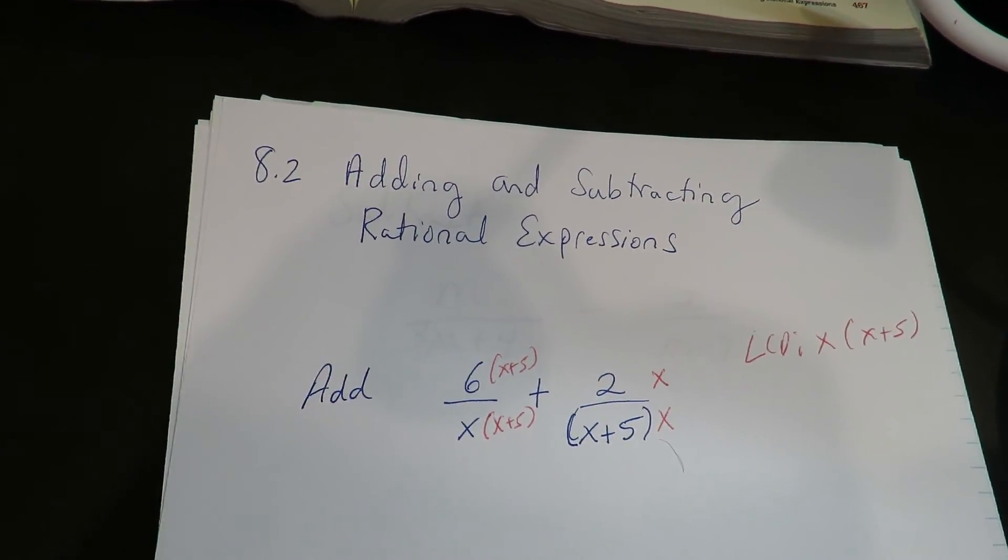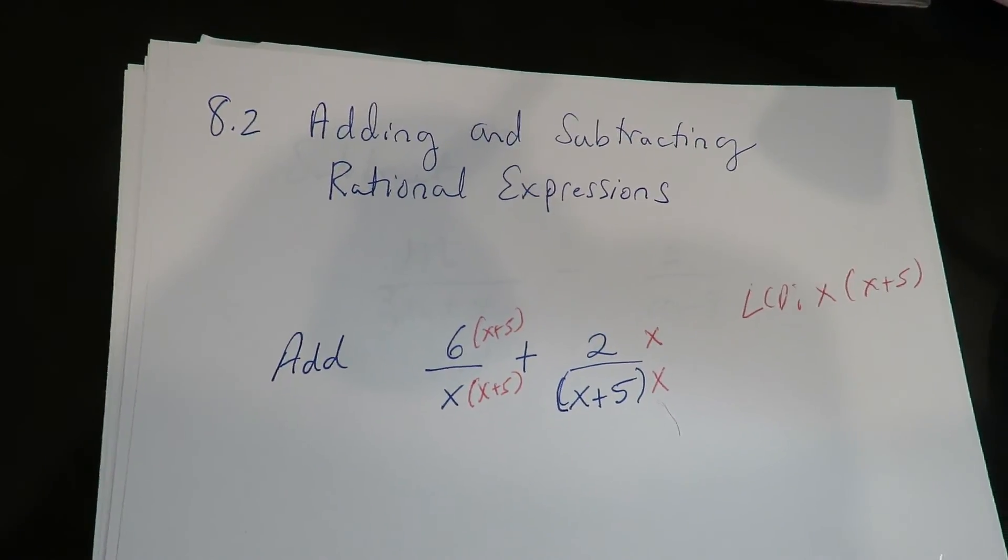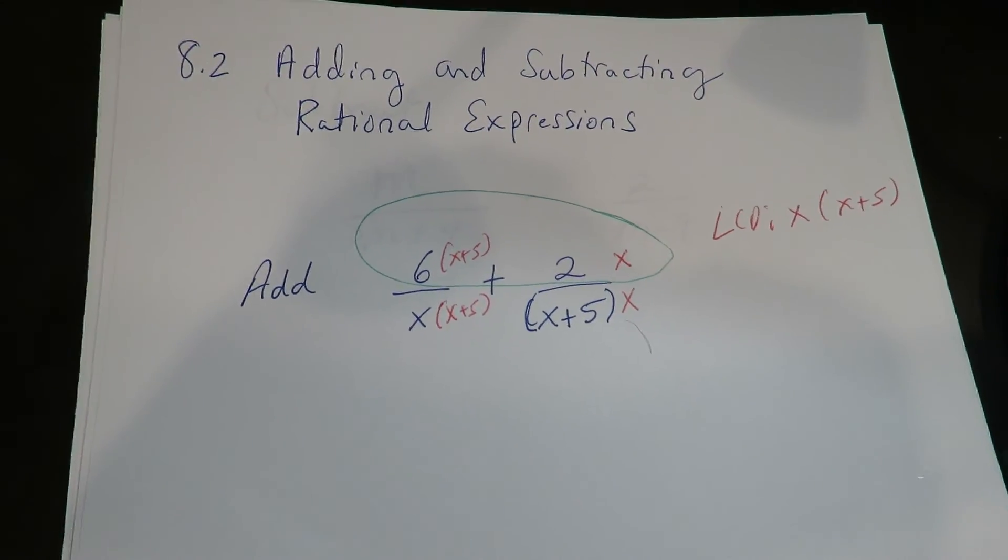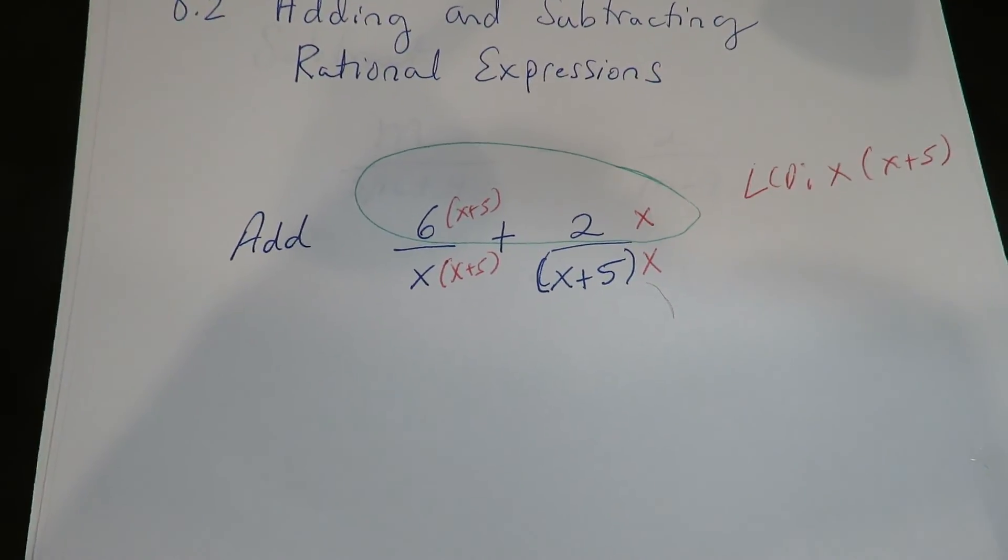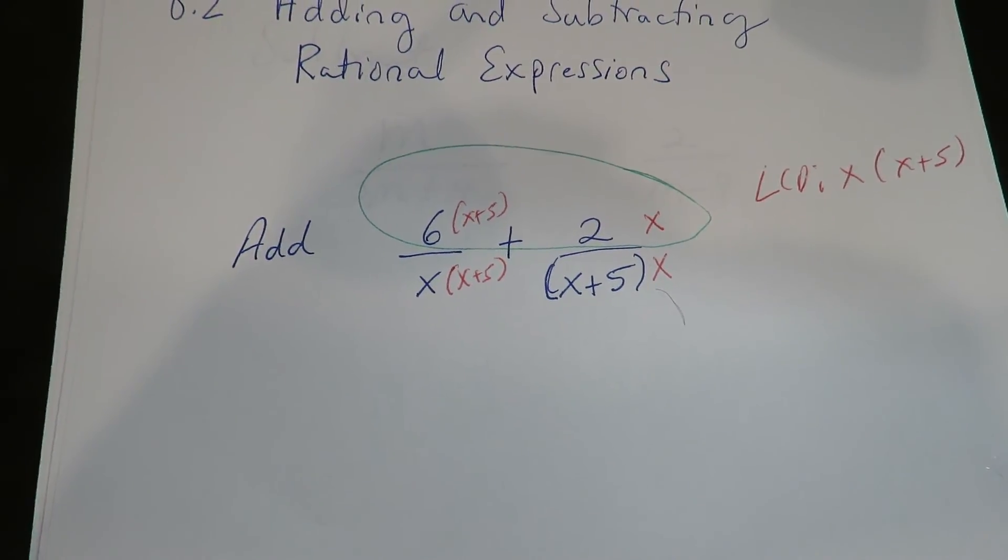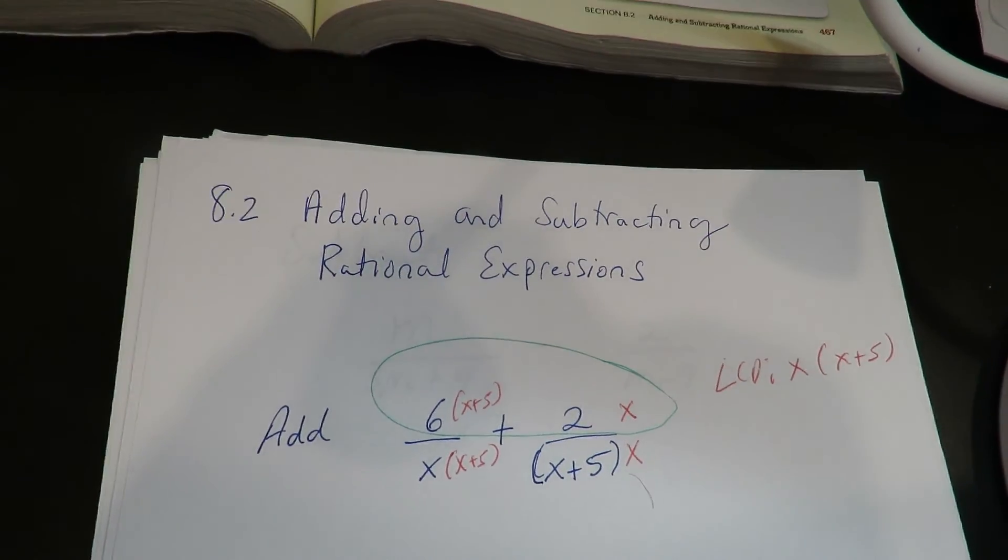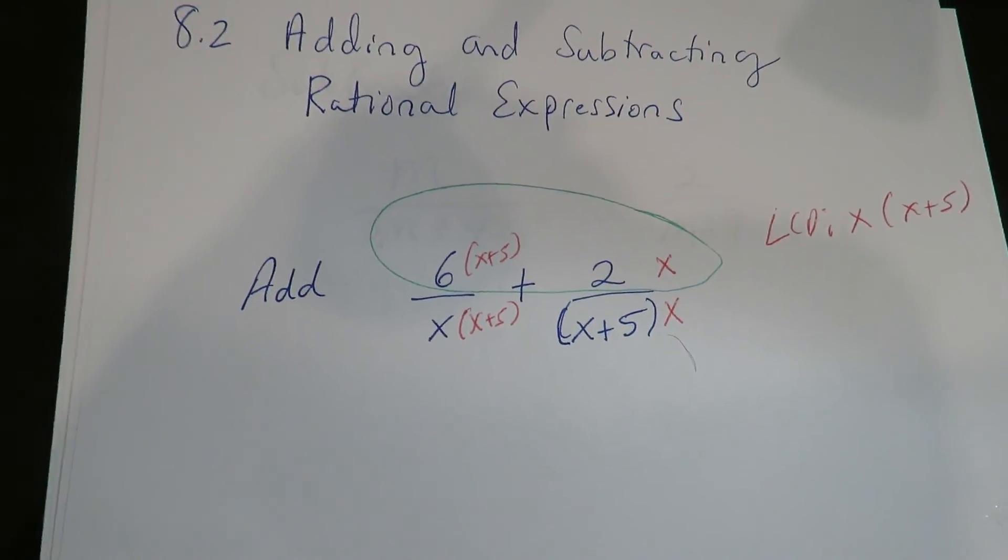All right, now what I'm going to do, since they both have the same denominator now, is I'm going to combine the numerators. The biggest mistake I see students do is that once they build up the fractions, they reduce them right away, which is wrong. Once you build up the fractions, you want to squish them into one item. That's the whole reason you're building it up, so that you can make two fractions into one fraction.